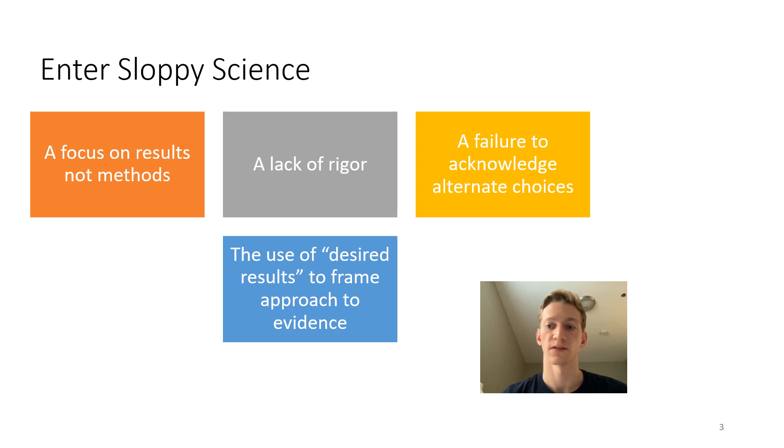Sloppy science is the practice of science without attention to detail and rigor. Shortcuts are taken and used in place of time and diligence. Alternative choices are ignored due to their disruption to the already assumed conclusion or other reasons. Desired results exist because of political pressure, financial incentive, the fear of more people dying, or the clout that comes from finding the cure.